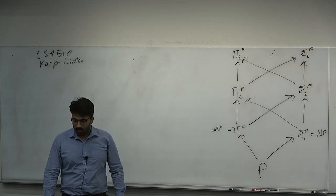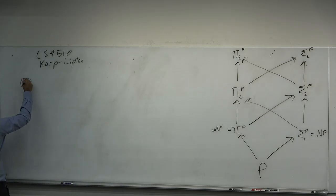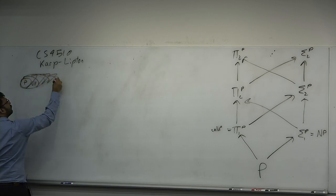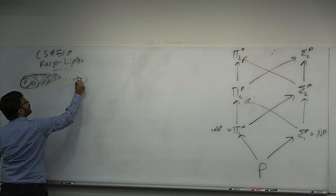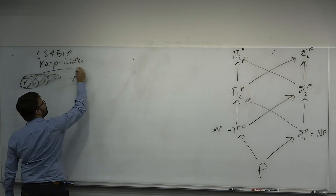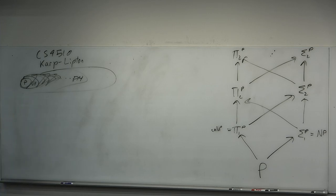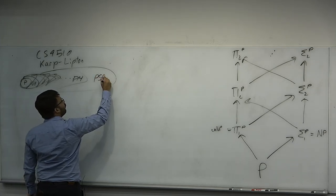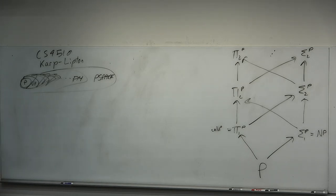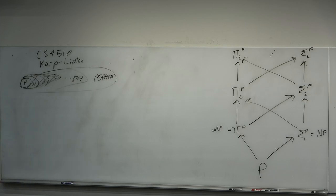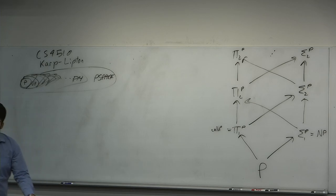We've mentioned that the polynomial time hierarchy is contained in P-space. If I were to draw a Venn diagram — this whole thing is PH. And we know that PH is contained in P-space. The levels of the polynomial time hierarchy were invented to help classify certain problems that are natural but not obviously in NP or NP-complete.